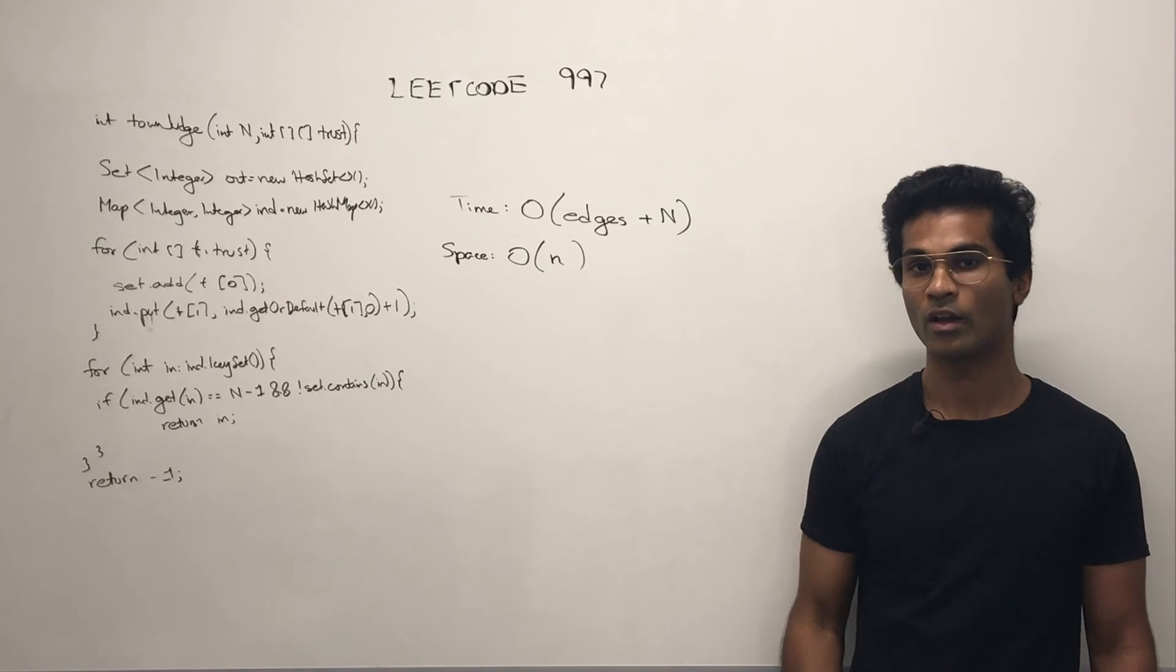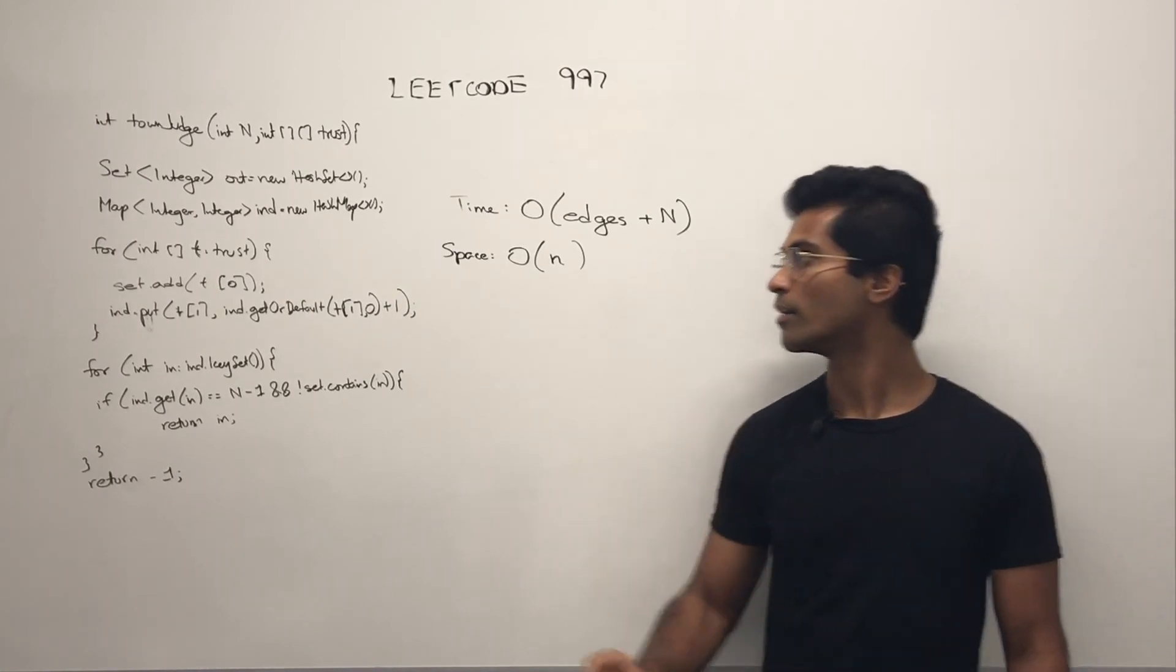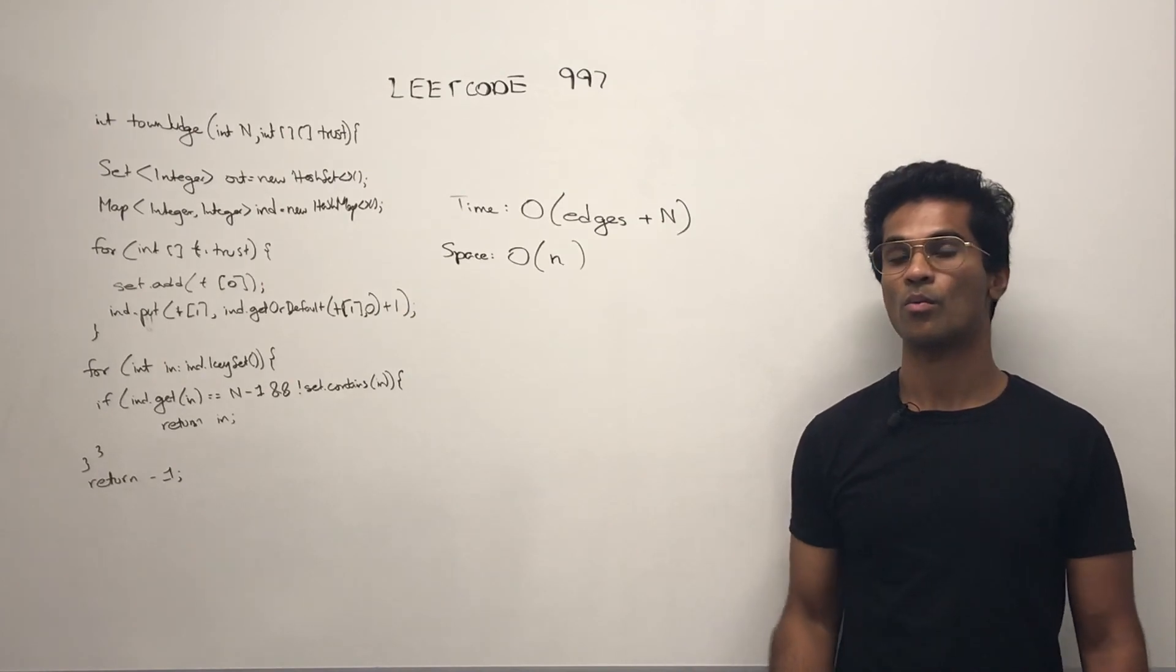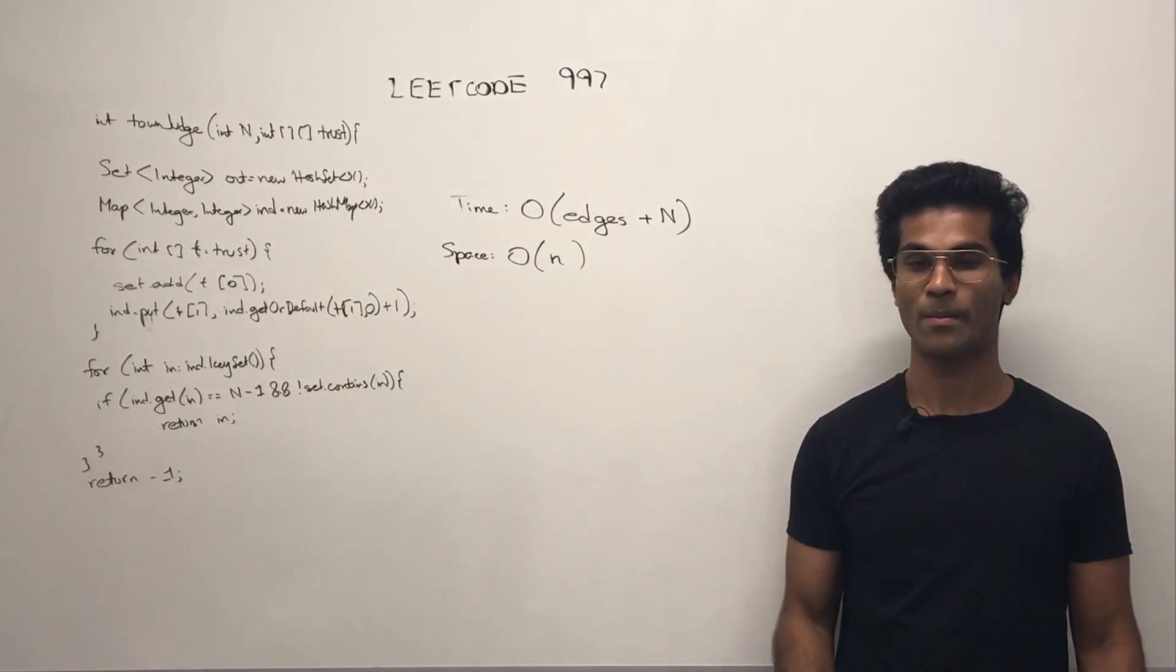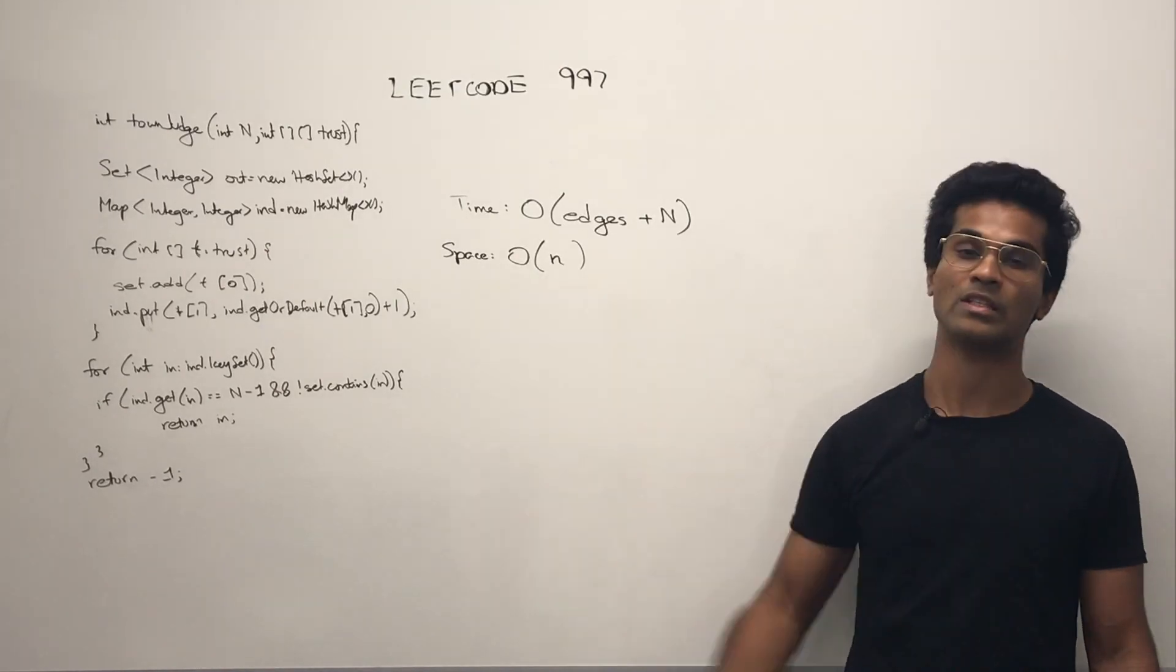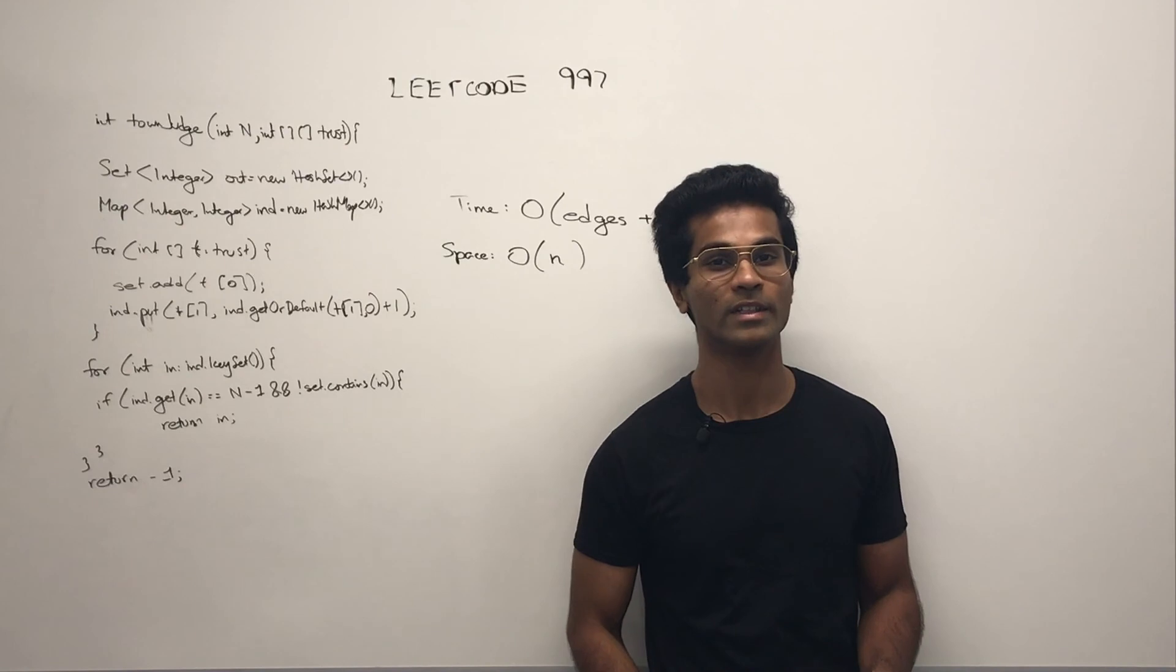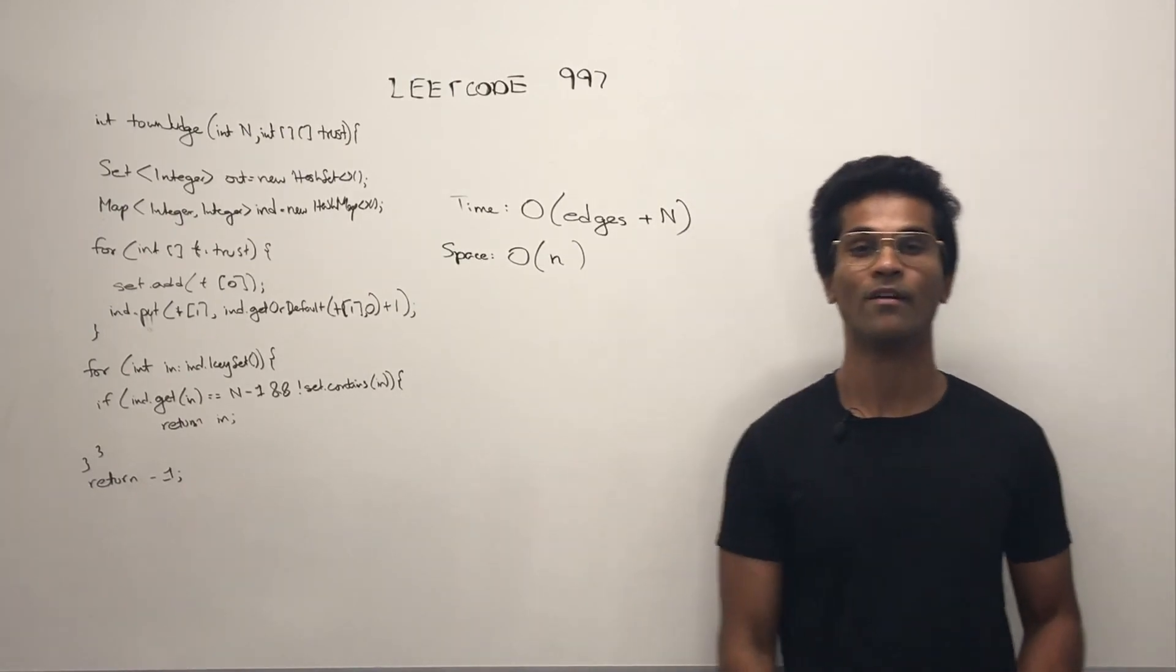For the space complexity, the only two data structures we have are the out degree and the in degree. So no matter what, it's going to be the maximum of the number of nodes we have, so that's why I put the space complexity as O(n). So that's how you solve LeetCode 997, find the town judge.